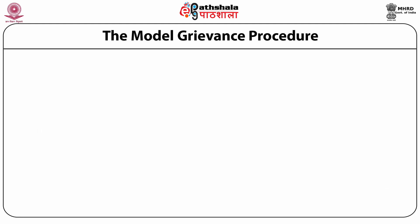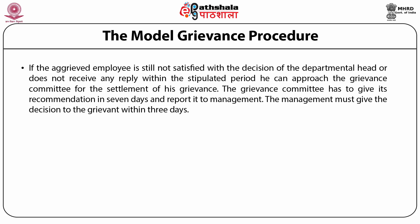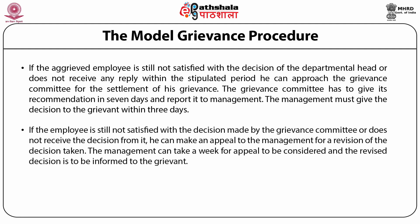In the third step, if the aggrieved employee is still not satisfied with the departmental head's decision, they can approach the grievance committee. The grievance committee must give its recommendation within seven days and report it to management, and management must give its decision within three days. In the fourth step, if still unsatisfied, the employee can appeal to management for a revision of the decision, and management can take up to a week to consider the appeal.